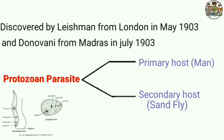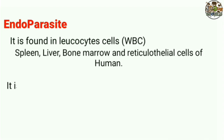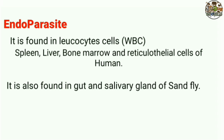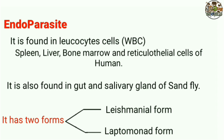This protozoan parasite has basically two hosts: the primary host (human) and the second host (sand fly). In the human host, it is found in leucocyte cells known as white blood cells, spleen, liver, bone marrow, and reticuloendothelial cells.